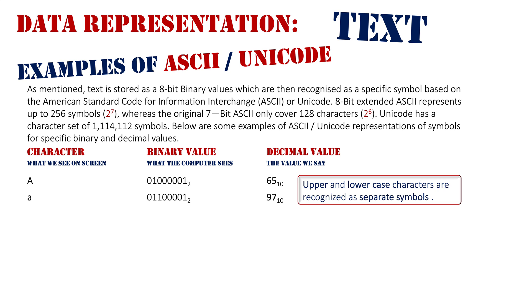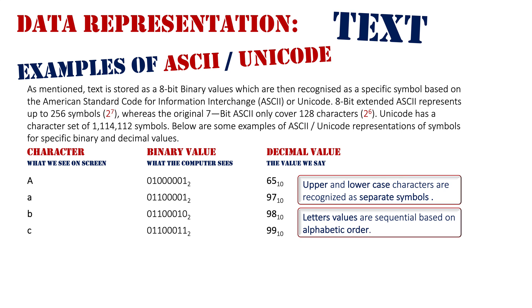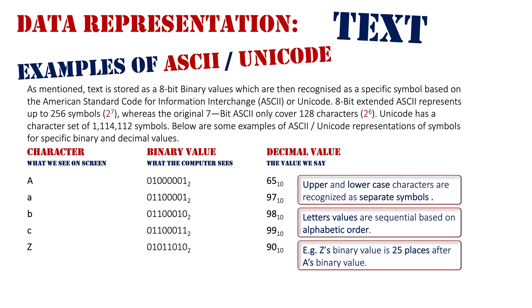Now let's look at some lowercase letters. Lowercase b is 98 and c is 99. As you can see by this pattern, letter values are sequential based on their alphabetical order — lowercase d would be 100, e would be 101, and so on. To further illustrate this: capital Z's binary value is 25 places after A's value. Capital B would be 66 in decimal, and Y would be 89. So all alphabetical letters are sequential, except uppercase and lowercase are separate.